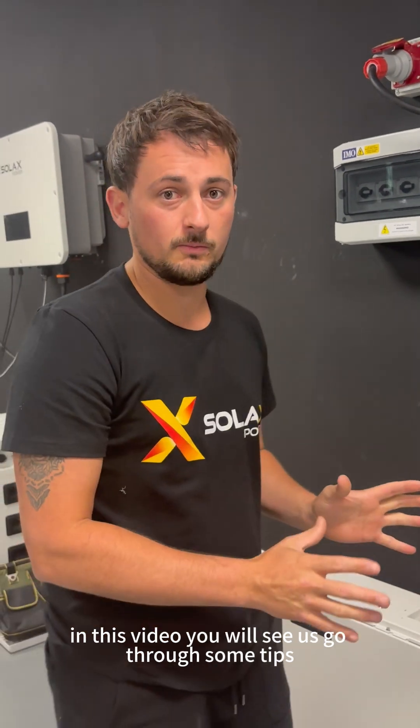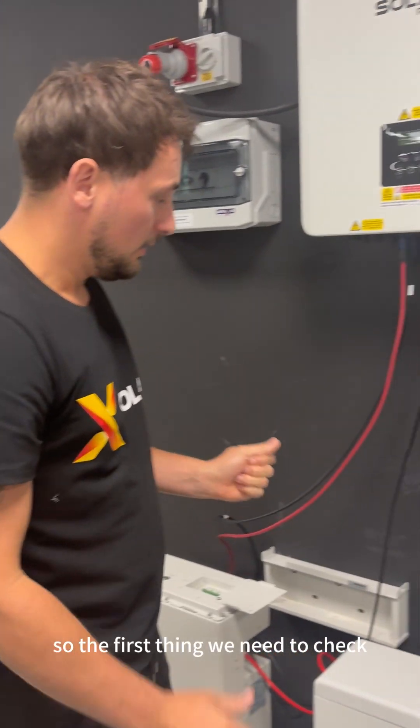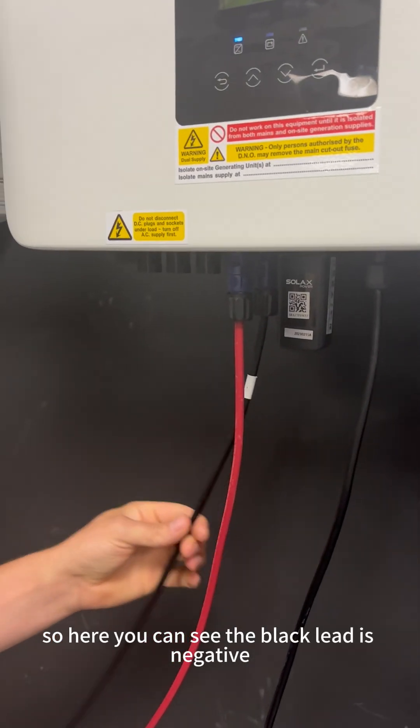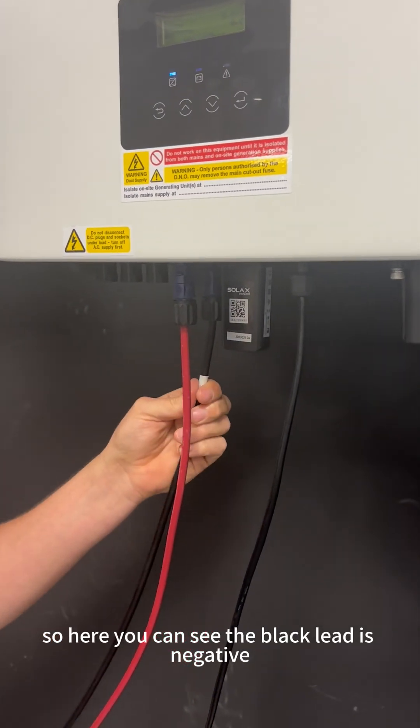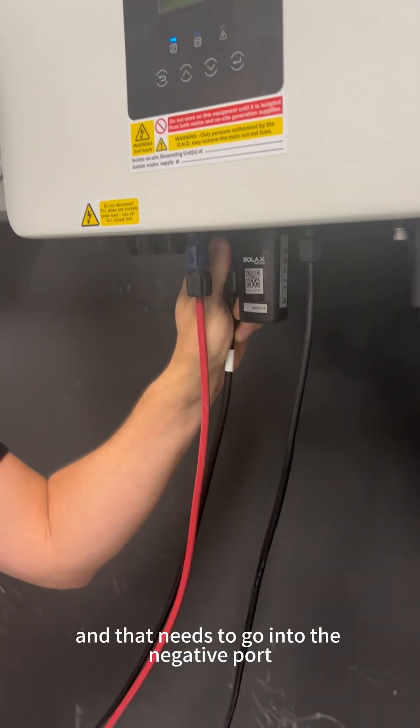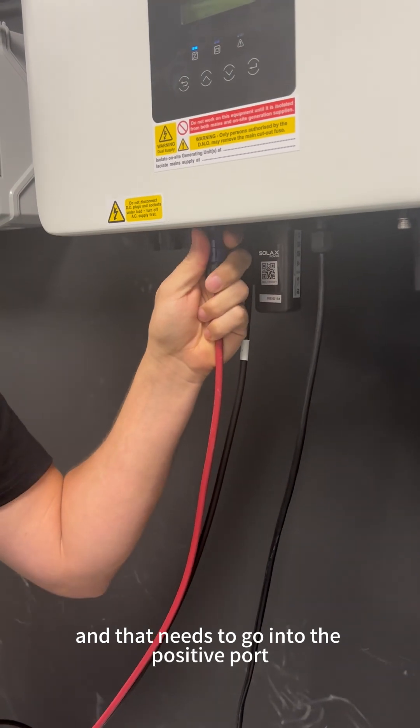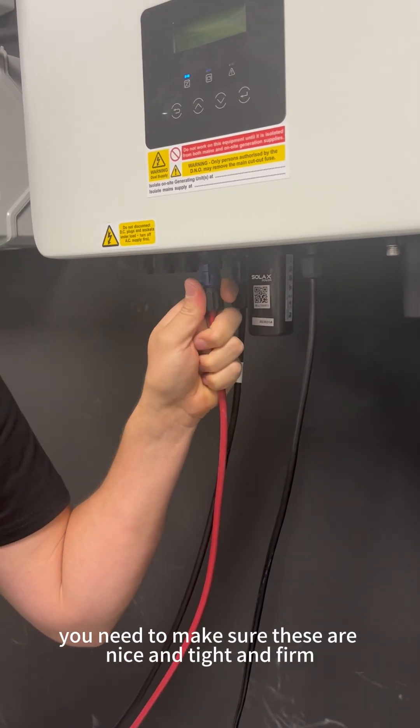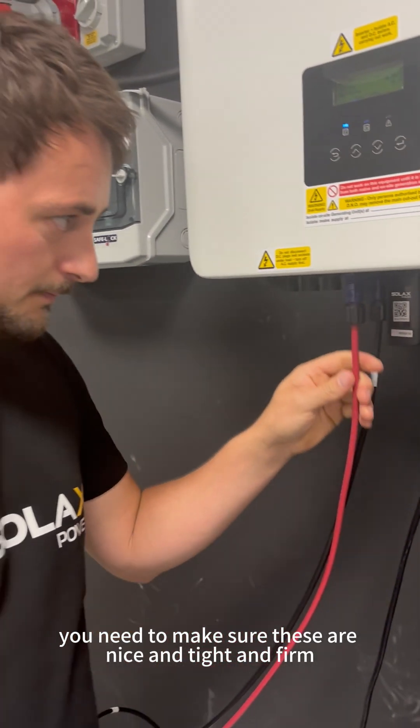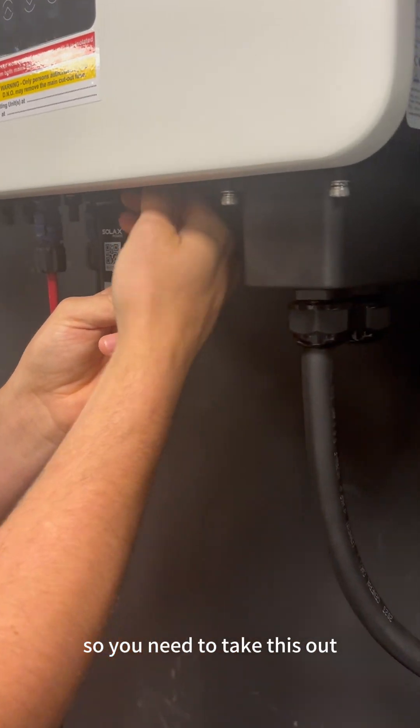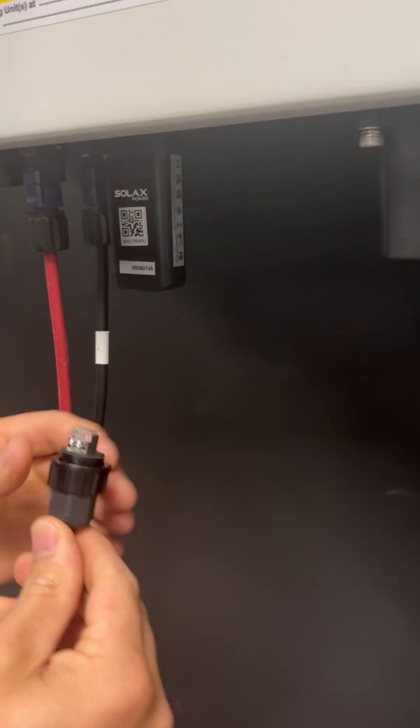The first thing we need to check is the battery ports. Here you can see the black lead is negative and that needs to go into the negative port. You've got your red lead and that needs to go into the positive port. You need to make sure these are nice and tight and firm. Then you have your BMS cable, so you need to take this out.